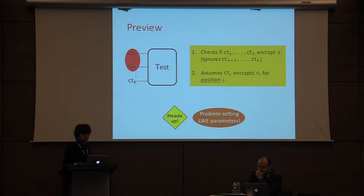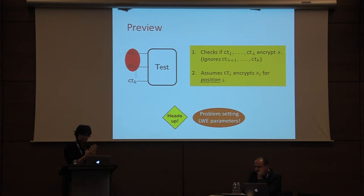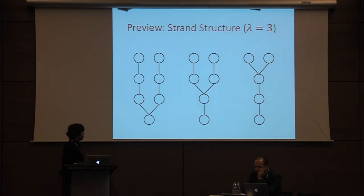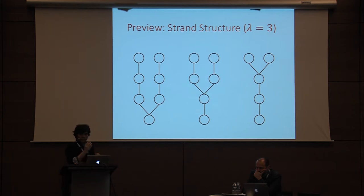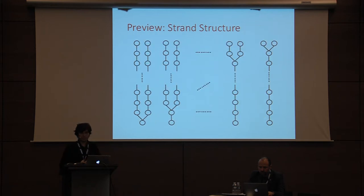A minor heads-up: the scheme I'm about to describe will have problems setting LWE parameters, but I will later describe how we get around that. There will be an underlying strand structure associated with our cycle tester. Suppose lambda equals 3, so string s is three bits long. We have three parallel strands, and the i-th strand bifurcates into two sub-strands at the i-th level. This structure generalizes for any arbitrary lambda and will appear regularly throughout.